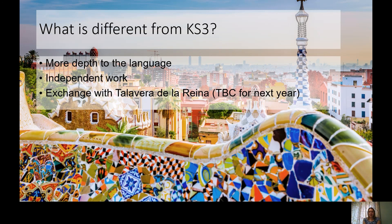The main difference from key stage three is that we go way more in depth into the language, looking at different grammar aspects and vocabulary. We expect you to learn your vocabulary every week, just like you have done through key stage three. You've already done past, present, and future tenses — that gives you a really good base to build on. We'll revise those, and by the end of year 11 you'll know them like the back of your hand, then build on with more tenses and grammar to develop your fluency and confidence.